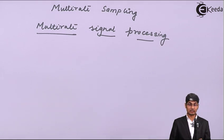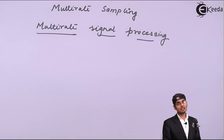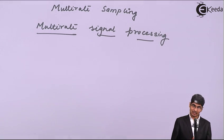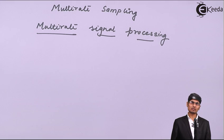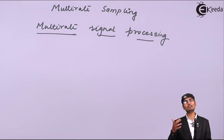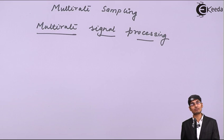Up till now we have seen signal processing, which means we are working with signals or designing systems that will work with special kinds of signals. We excite the system with some signals and that system produces a response in terms of signals — we were processing signals. So what do we mean by multi-rate signal processing? That means these are special types of systems.